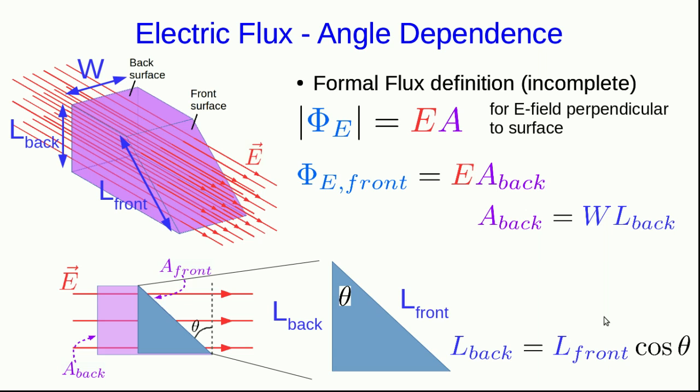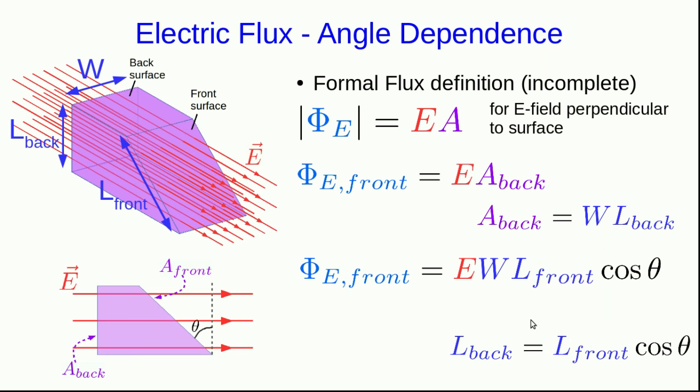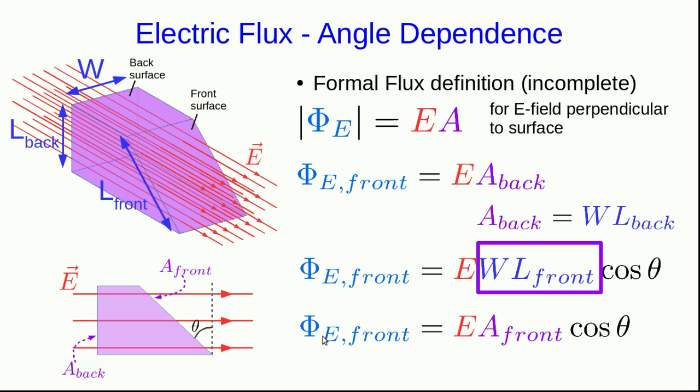That's everything we need, because I can now plug that in here and get that the flux through the front is now all in terms of things to do with the front, the E field through it, the width of the front, the length of the front, and the cosine of the angle that the front surface makes with the perpendicular. And notice that w·l_front is just A_front. And so here is my expression for the flux through the front surface.